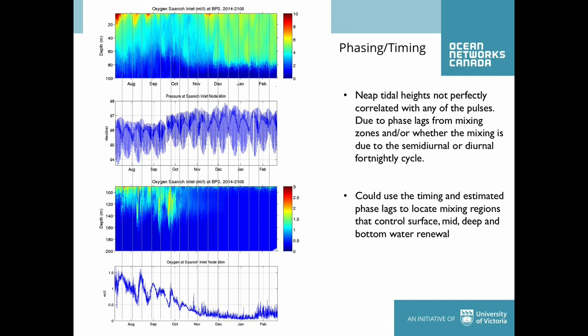We can also see that these deep intrusions sometimes correspond to a lowering of oxygen. It's dangerous to be at the hundred-meter depth right at the oxycline. The theory is that you push up deoxygenated water by the influx of this new, more oxygenated water — that's why you can get some out-of-phase behavior. Some of this is actually in phase between the influxes.